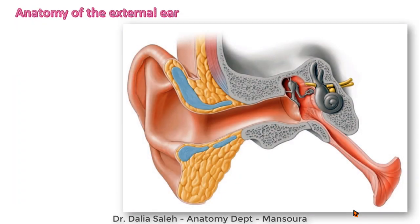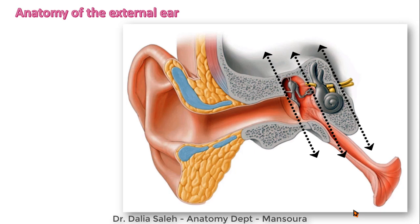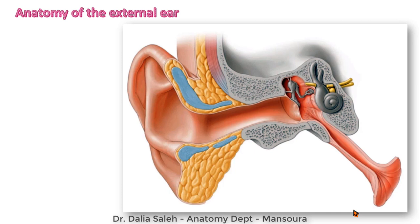Let's talk first about the anatomy of the ear. The ear, as you can see in this diagram, is divided into three regions: the external ear, the middle ear, and the internal ear. Let's focus on the external ear. It is formed of the auricle or the pinna, which is made of cartilage — that's why it's flexible and you can move it easily — and the external auditory meatus, which is a canal partly made of cartilage and partly made of bone.